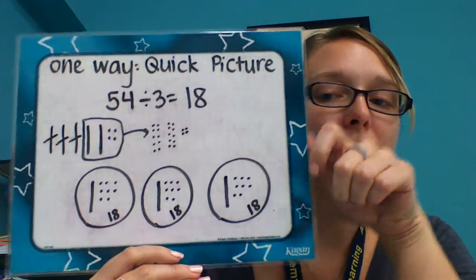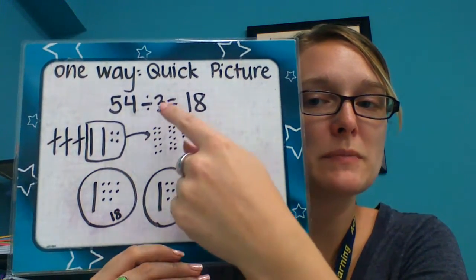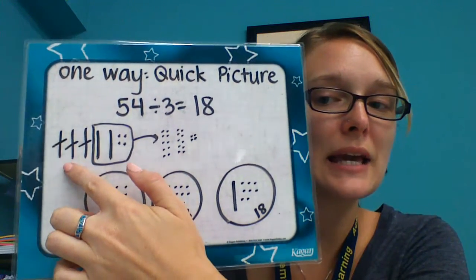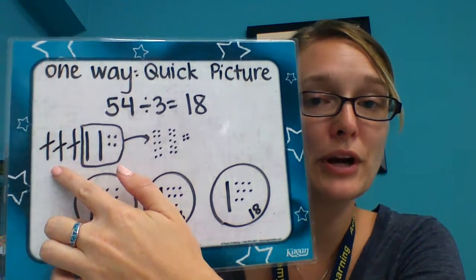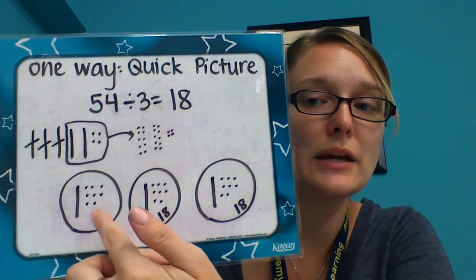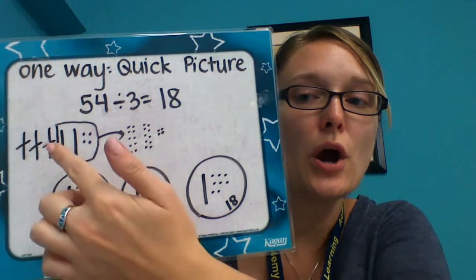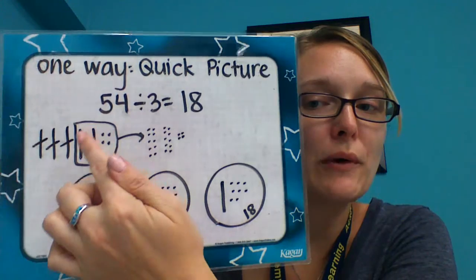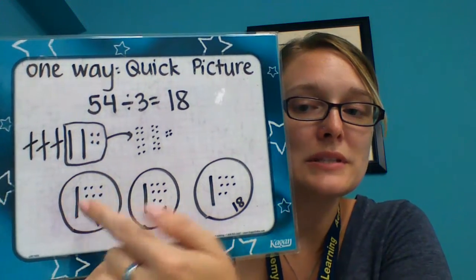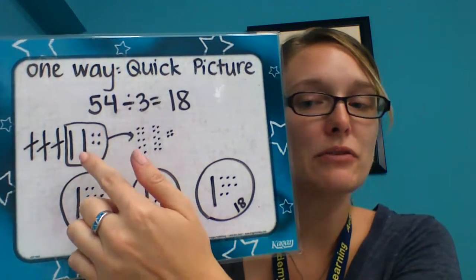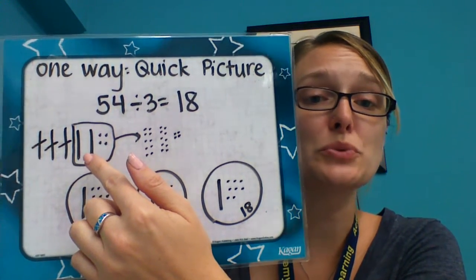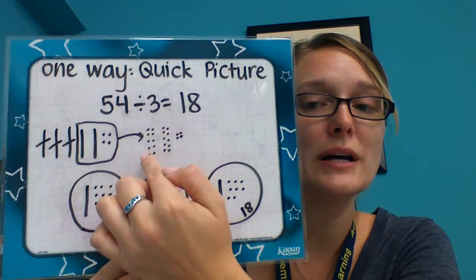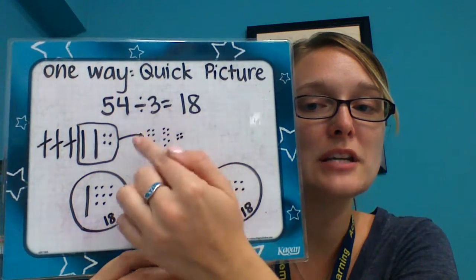Then, once I've got this drawn out, I would make three groups because my divisor is three. I do three groups. Now I'm going to take and try to give out the 54 to these three groups. So I put one 10 here, one 10 here, one 10 there. I still have 24 left over. I can't go 10, 10, 10 because I don't have three 10s. I need to regroup — by splitting up the 10s into ones. So now I have 24 ones.